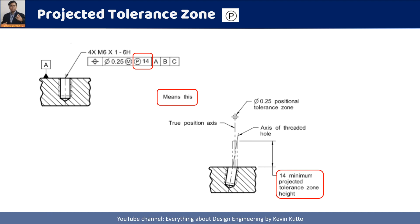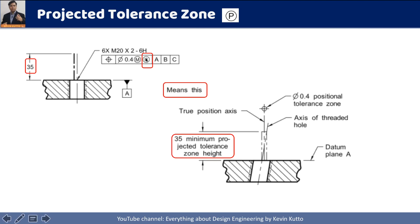Here is how the projected tolerance zone is represented. You see the P symbol — this represents the projected tolerance zone, and the value 14 represents the height of the other part (the clearance part). I am projecting my tolerance zone to that height of 14 mm and maintaining 0.25 position tolerance along that height. In some cases, there is no value in the feature control frame after P, and instead the value — for example, 35 — is shown in the drawing with a phantom line. There are two ways to show it: either in the drawing itself or after the P symbol.